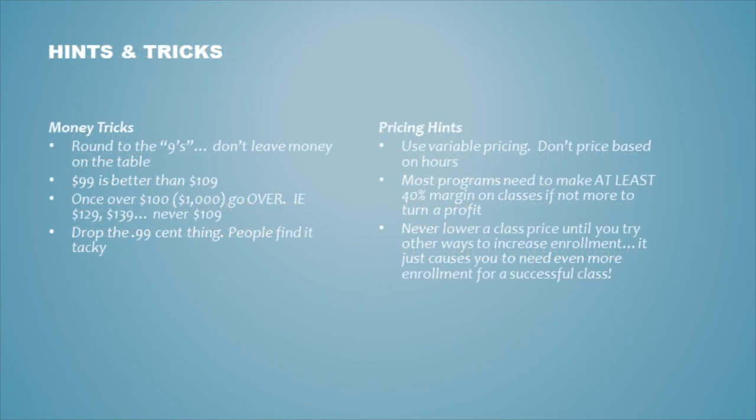There are some hints and tricks to calculating the price. Remember to round to the nines — you don't want to leave money on the table, and to most people a five is no different than a nine. $99 is always better than $109. Once you cross over the $100 barrier, that's a real psychological barrier — so is $1,000. So if you're going to go over, go over: jump from $99 to $119, $129, $139. Forget the $0.99 trick — people find it tacky.